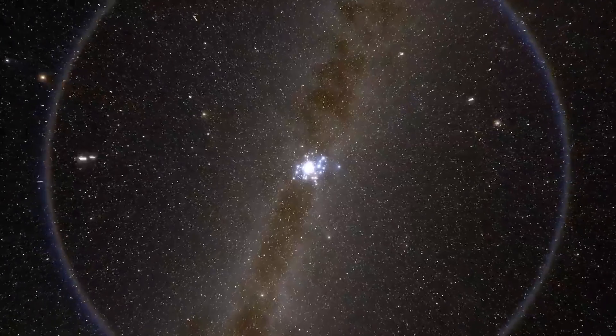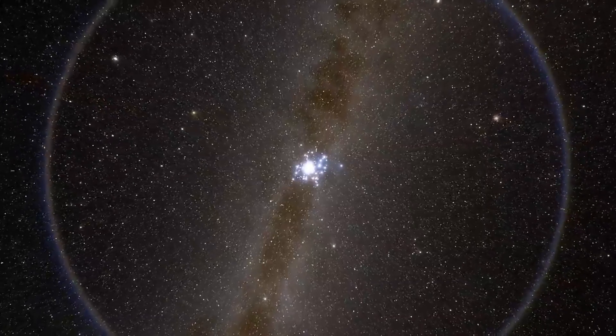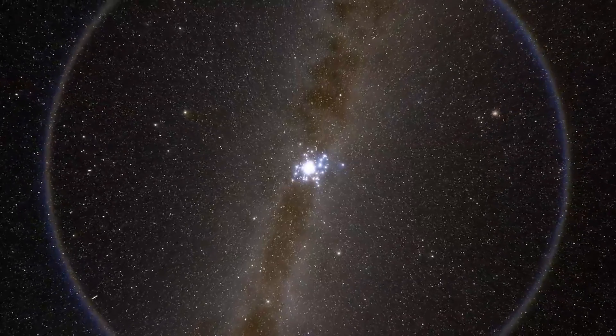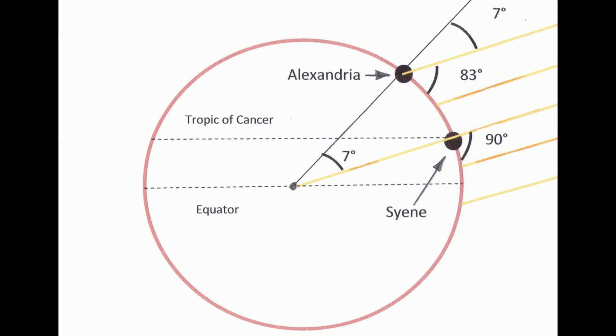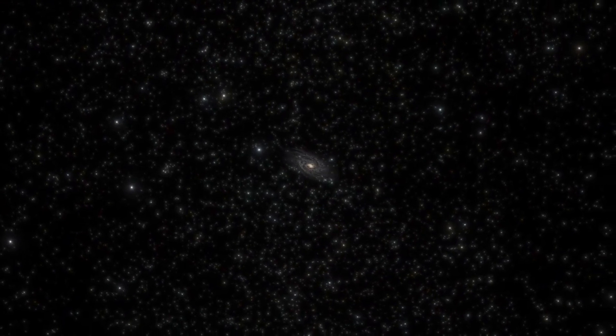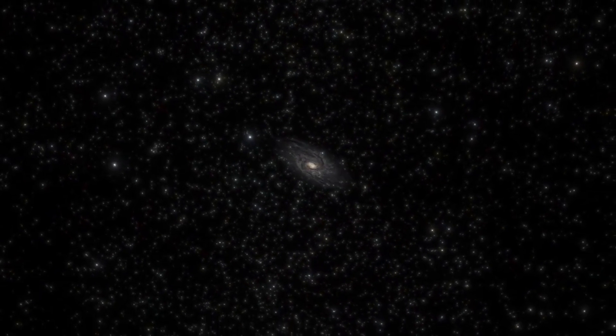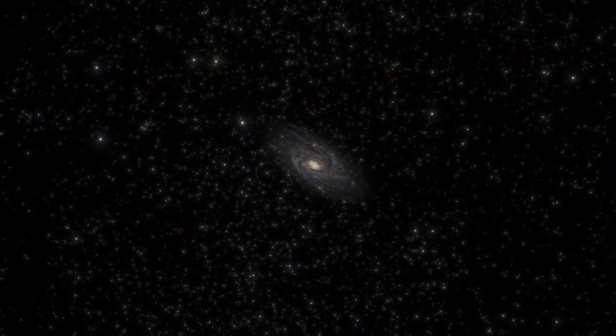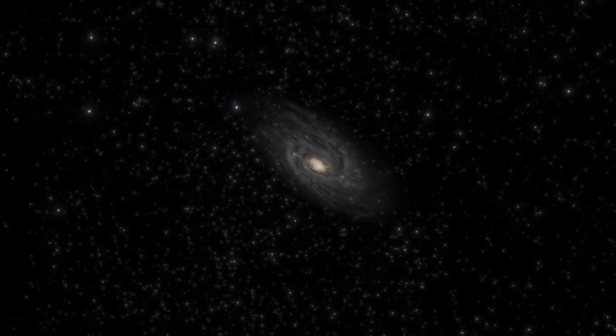However, ancient Greeks, for example, realized that the Earth is round and even calculated its radius. It took Eratosthenes only the shadow from the Sun and geometry to accurately calculate the Earth's radius. Similarly, we can obtain a fairly accurate representation of what our galaxy looks like.